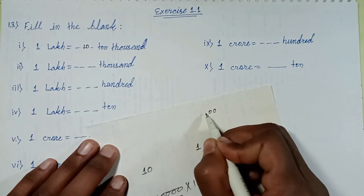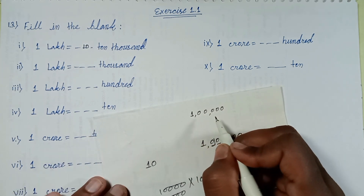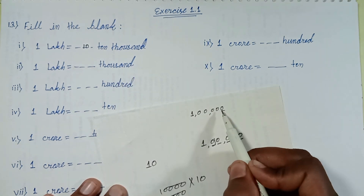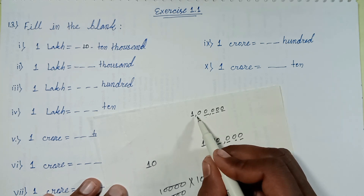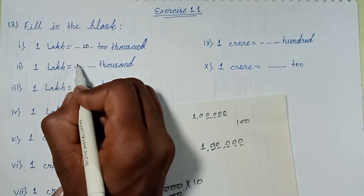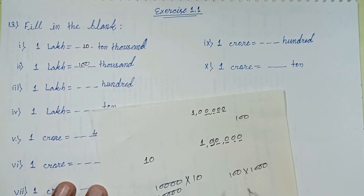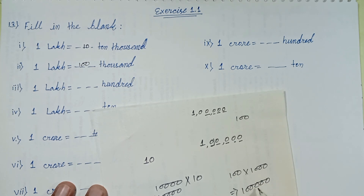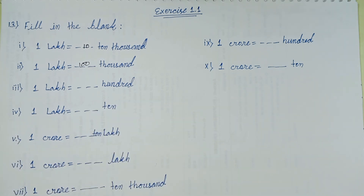Counting the place values: ones, tens, hundreds, thousands, ten thousands — with this digit, one lakh. Hundreds multiplied with thousands. One lakh equals one hundred thousands. Let's solve the next question.